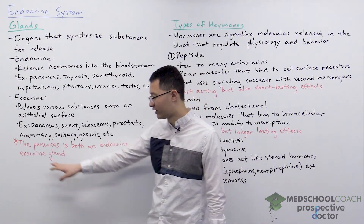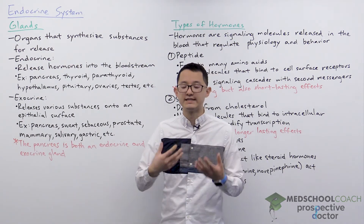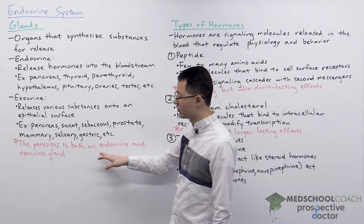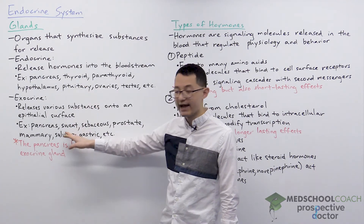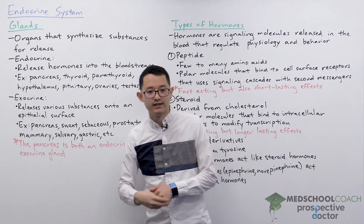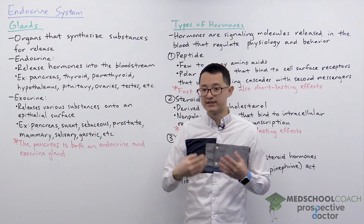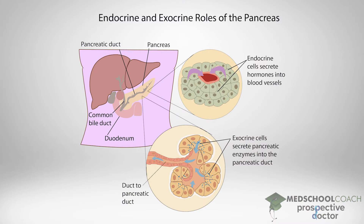The mammary glands secrete milk and those are released on the surface of skin. If you're paying attention, you'll notice I mentioned one gland in both endocrine and exocrine — that is the pancreas. The pancreas is really a unique organ; it has both an endocrine role and an exocrine role. Some cells in the pancreas secrete hormones insulin and glucagon into the bloodstream, while other cells secrete digestive enzymes through the pancreatic duct into the gastrointestinal tract.